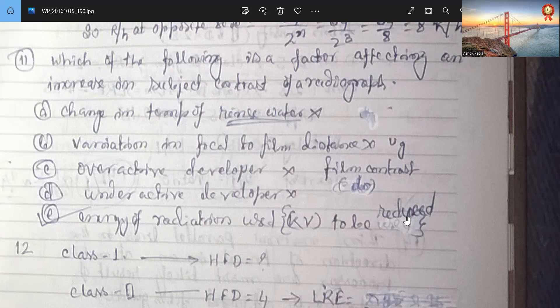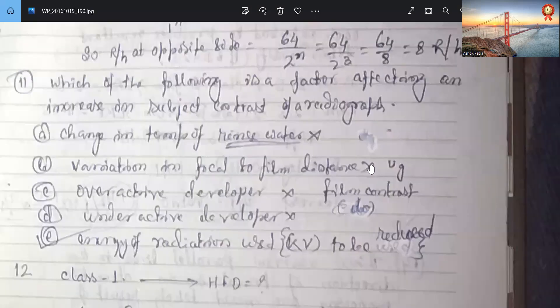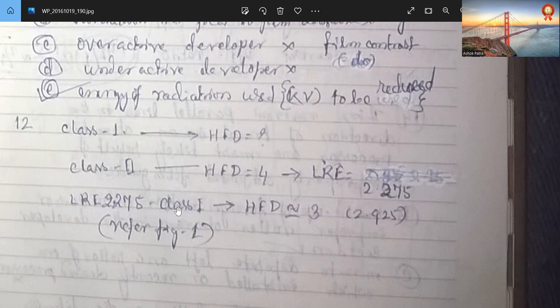Energy of radiation used Kb to be reduced. So here is the subject contrast, and if it is developing, this is film contrast. Class 1 HFD is 2. Class 2 HFD is 4. Density for LRE 2.275. LRE 2.275 class 1. So when going for class 1 it is HFD 3, it is 2.925.